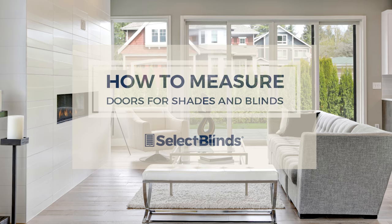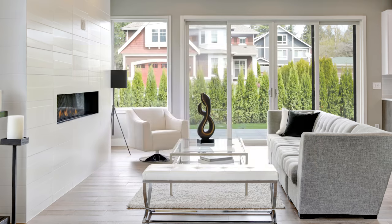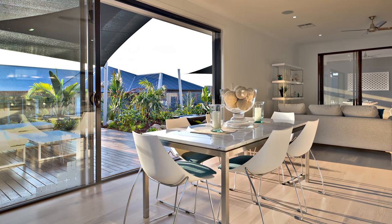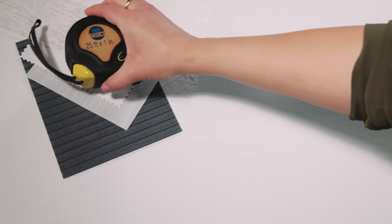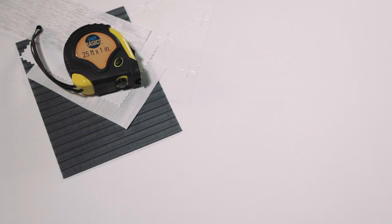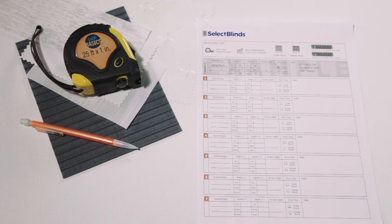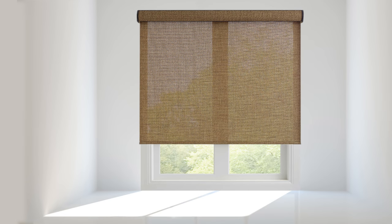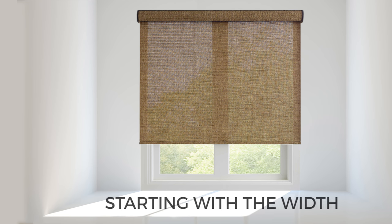Measuring sliding glass doors and French doors for window treatments is basically the same as measuring your windows. To start, grab a measuring tape, pen and paper, or use the measuring worksheet on our website. Since the depth of most doors is too shallow for an inside mount, you'll follow the same steps for measuring outside mount windows, starting with the width.